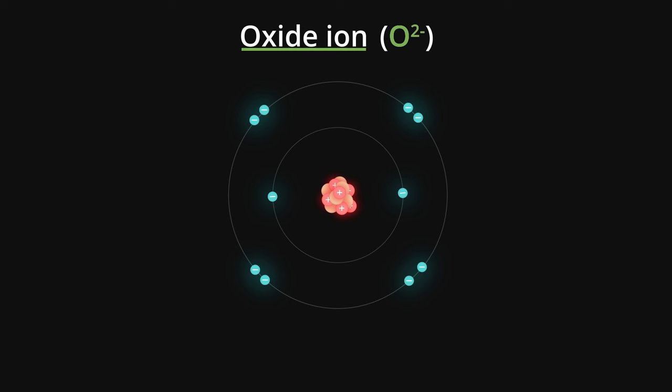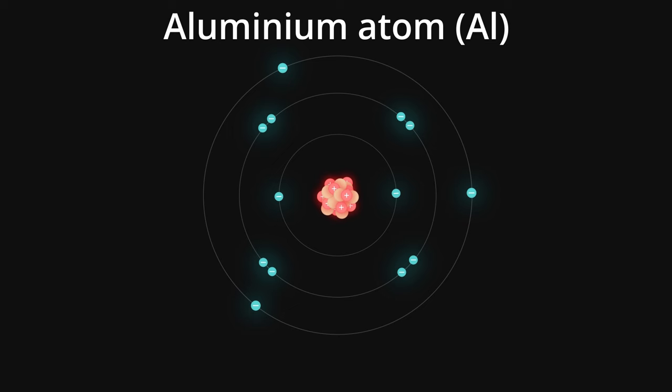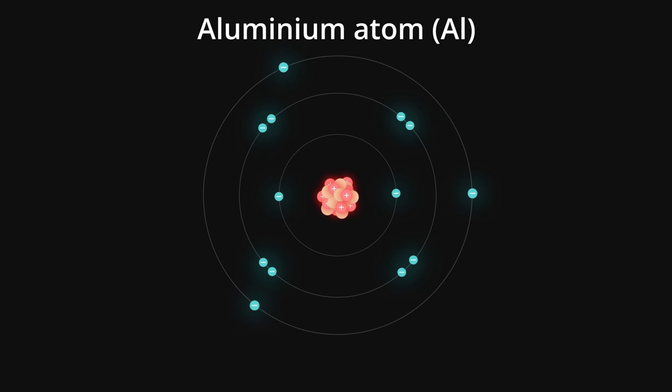So when an atom has an almost full outer shell, it wants to take up more electrons. But what about atoms that start out with just a few electrons in their outer shell? Let's look at aluminium. It has three electrons in its outer shell. You'd think that getting five more would do the trick. But there are limits to how many extra electrons atoms can get. What the aluminium atom can do instead is get rid of its valence electrons.